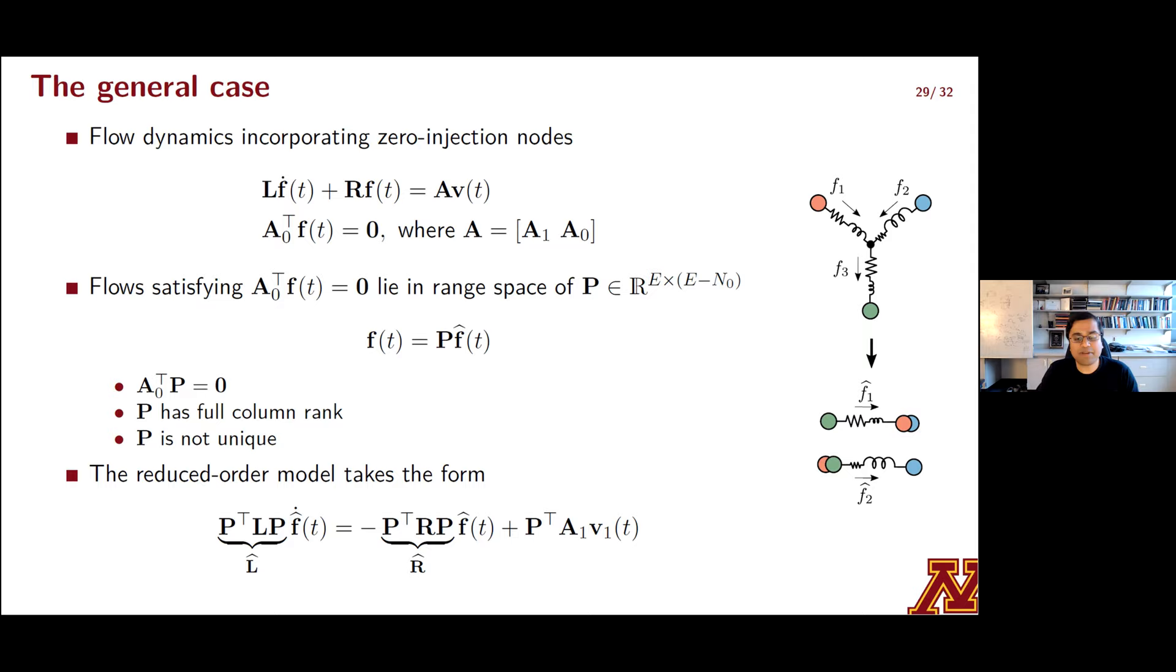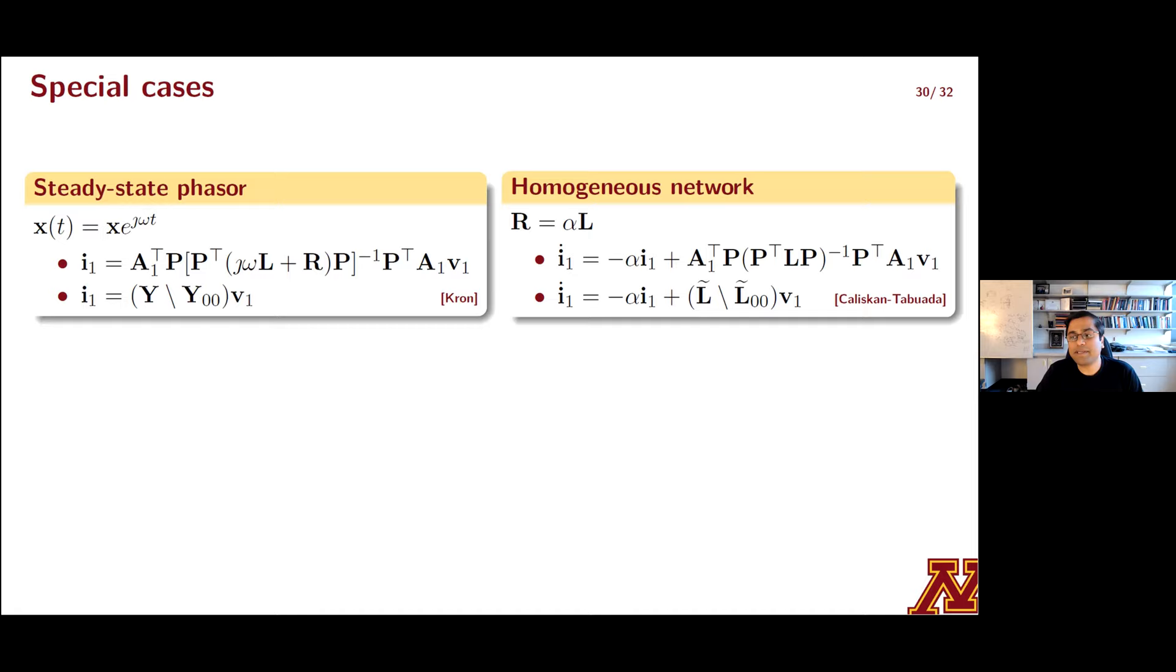And so this choice gives us a decoupled RL circuit interpretation. And the last term on the RHS then shows up as a linear combination of voltages in V1. And this is what we have tried to illustrate in the figure on the right. So this all sounds great. But is it compatible with phasor domain Krone reduction? And what we know about Krone reduction for homogenous networks with identical R over L ratios? And we'll get to that next. And that's what I'm going to end with. So for all the time domain quantities in our generalized reduced order model, if we substitute the steady state phasor representation, what you're going to get is an equation that relates I1 and V1 that are now complex valued phasors. And this is shown in the first bullet in the box on the left.